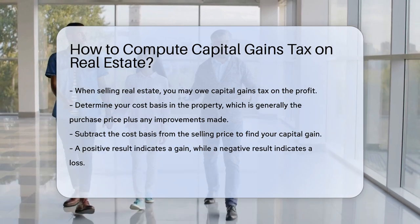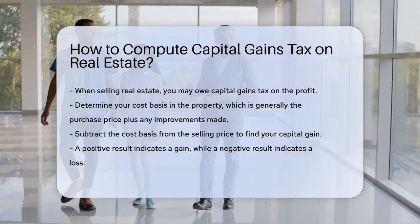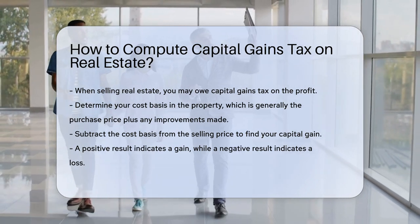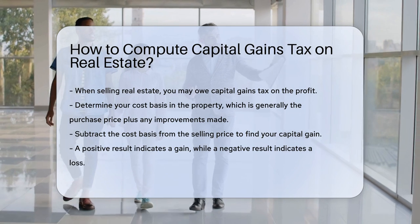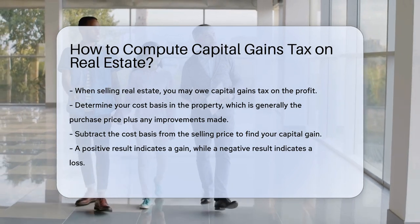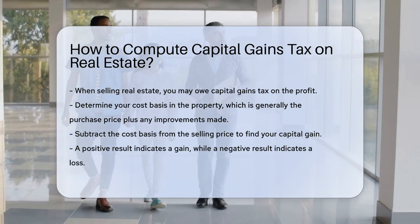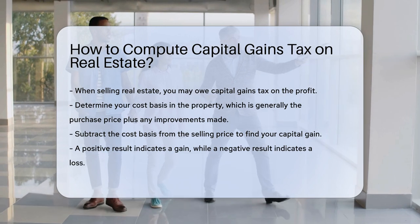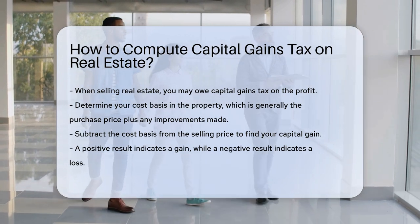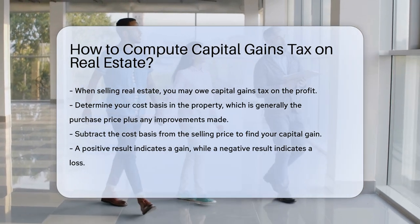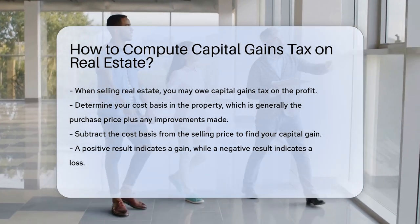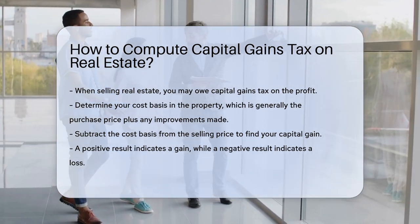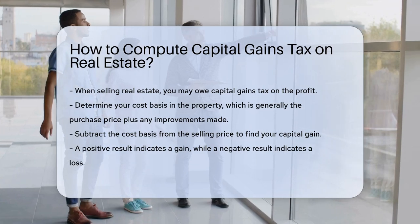First, determine your cost basis in the property. The cost basis is generally the purchase price plus any improvements made. Subtract the cost basis from the selling price to find your capital gain. If the result is positive, you have a gain; if negative, you have a loss.